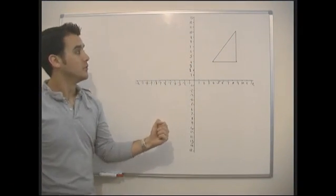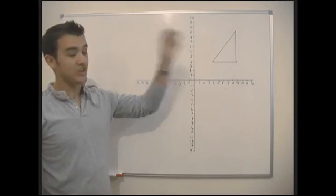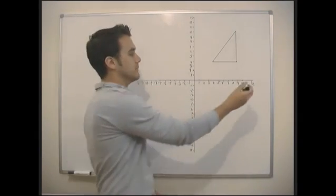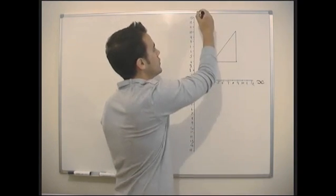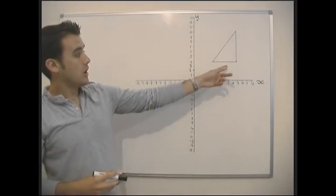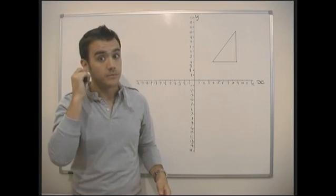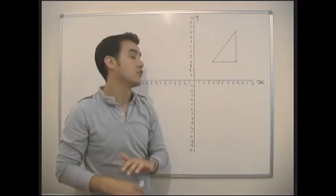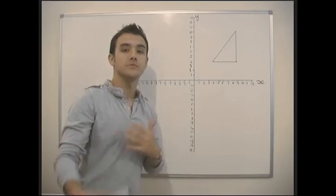This lesson is all about transformations — basically taking a shape on the y and x axis. We've got a triangle, though it could be any shape: a square or anything. Often you'll find triangles are used. We need to do some different things to this triangle.